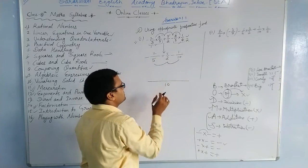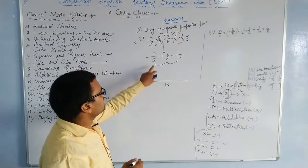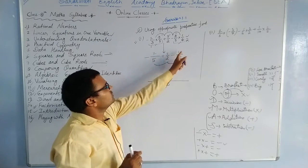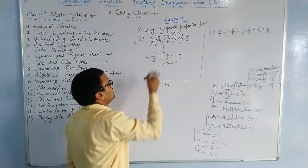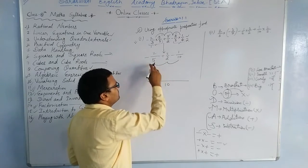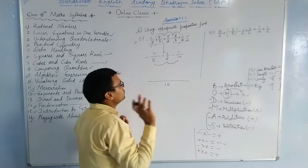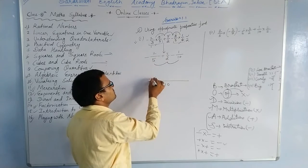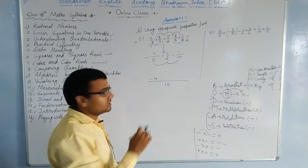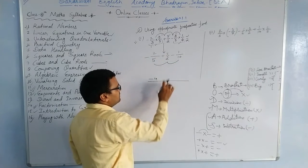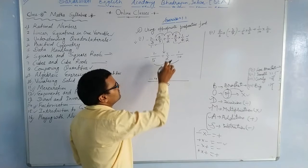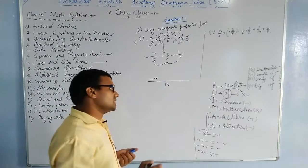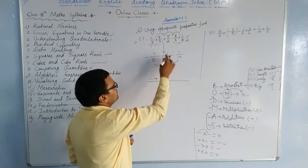10 is in the table of 2 as well as in the table of 5, so LCM is 10. We divide 10 by each denominator and multiply the result by each numerator. For the first fraction −2/5: 10 ÷ 5 = 2, and 2 × 2 = 4. For the second fraction with denominator 2: 10 ÷ 2 = 5, and 5 × 5 = 25.